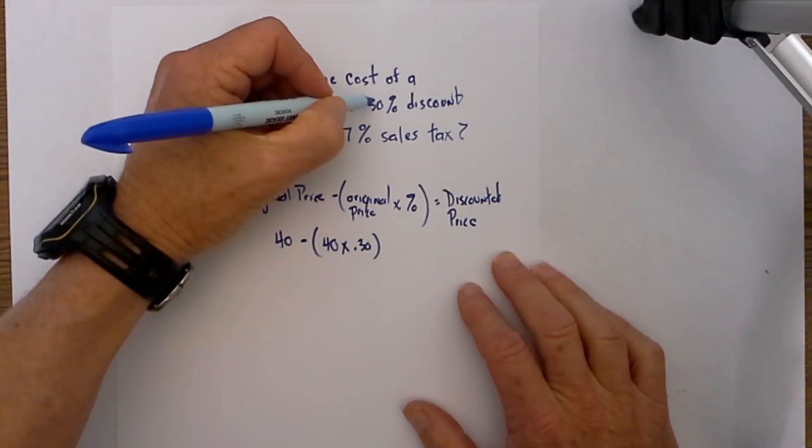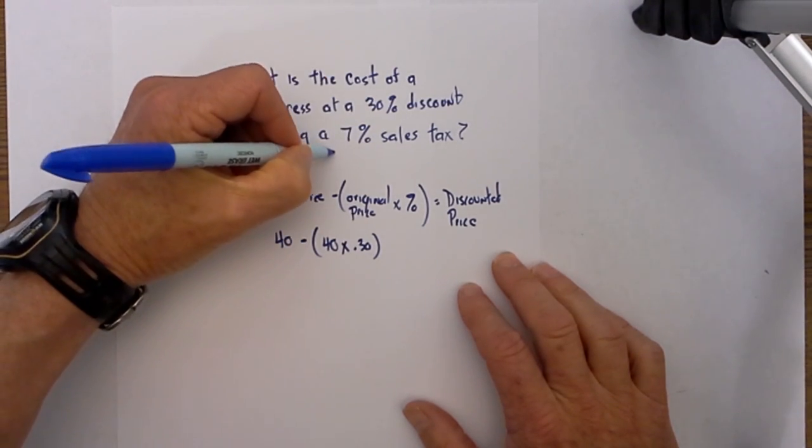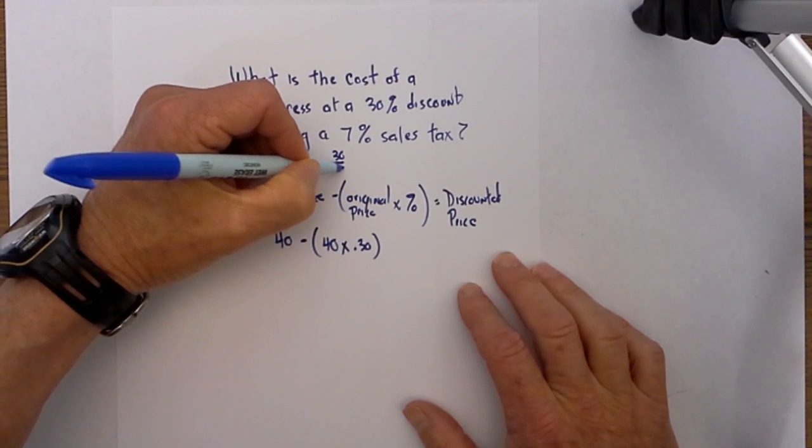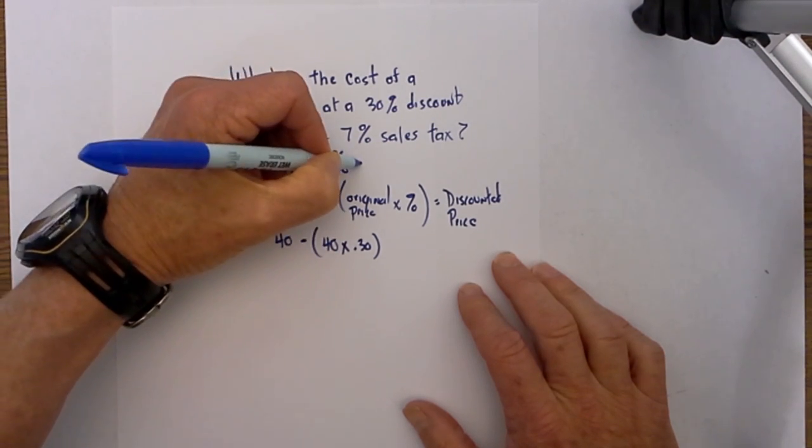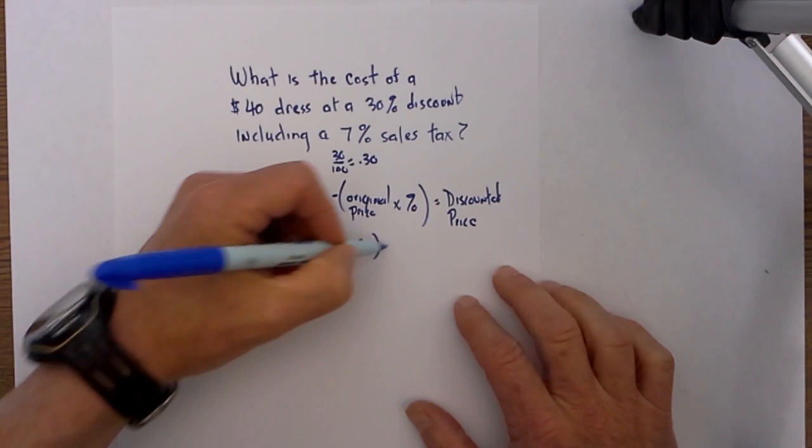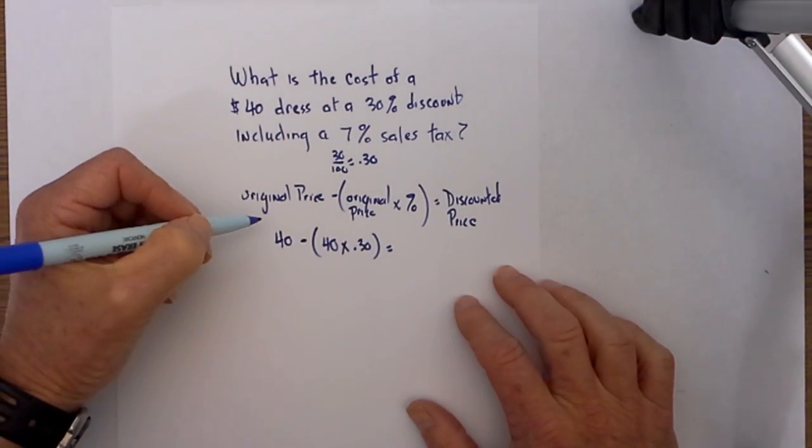How did I get 0.30? If you take 30% and divide it by 100, it will convert it to a decimal of 0.30. That will equal our discounted price.